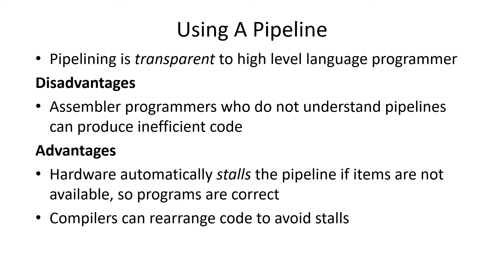Pipelining is transparent to the high-level programmer — you don't see it at all. The disadvantage, though, is that if you don't know that pipelining exists, you can write inefficient code. The code can use registers next to each other and cause data hazards or control hazards. Fortunately, the hardware will stall if you do this, and the programs will always be correct. Compilers can rearrange your code and optimize it to avoid the stalls.